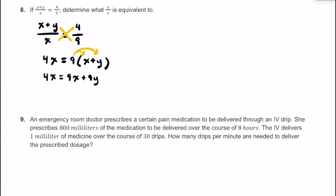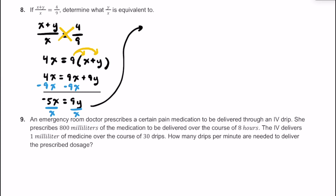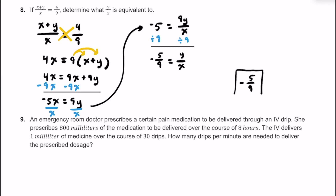Subtracting 9x from both sides gives negative 5x equals 9y. Dividing both sides by x, we get negative 5 on the left and 9y over x on the right. Then dividing both sides by 9, we get negative 5 over 9 equals y over x. So y over x is equal to negative 5 to 9, or negative 5 ninths.